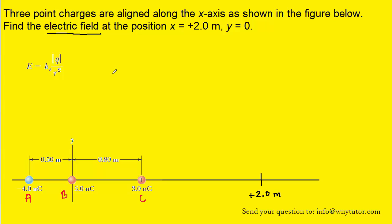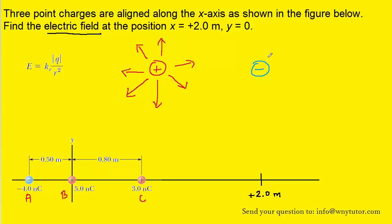There's an additional background fact we have to take into consideration before we begin the calculation. We must remember that a positive charge produces an electric field that emanates away from that positive charge in all directions. On the other hand, a negative charge produces an electric field that points towards the negative charge. These two facts are very important when we go to calculate the electric field, so please keep them in mind.